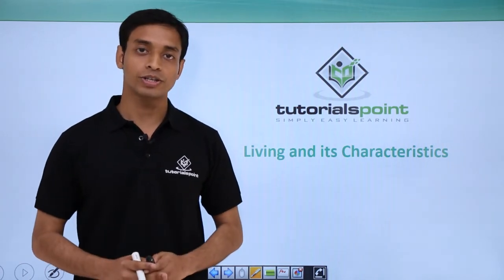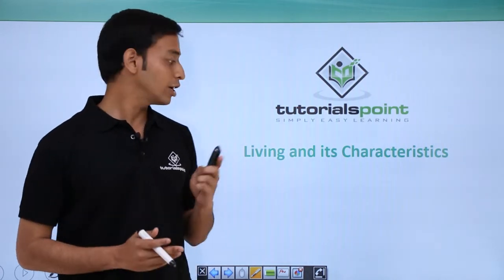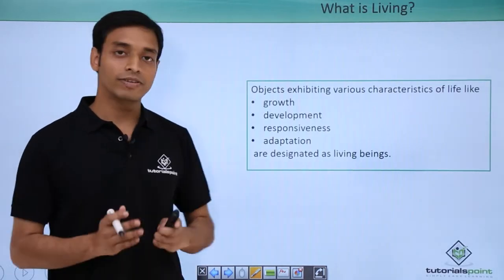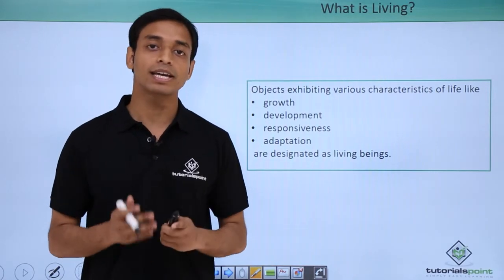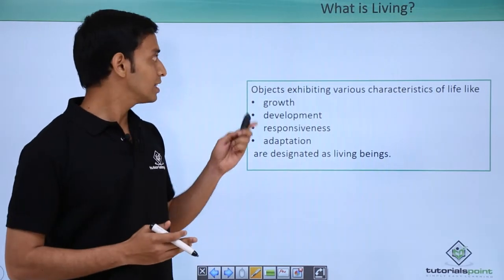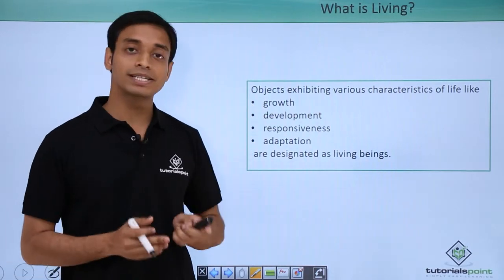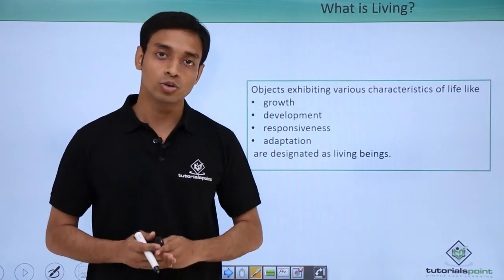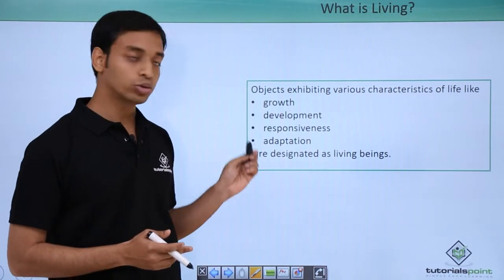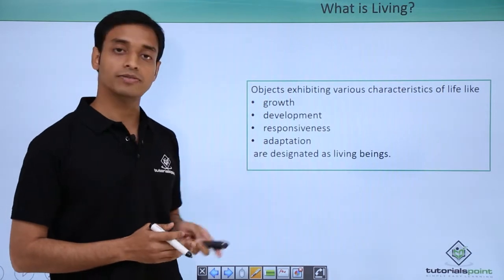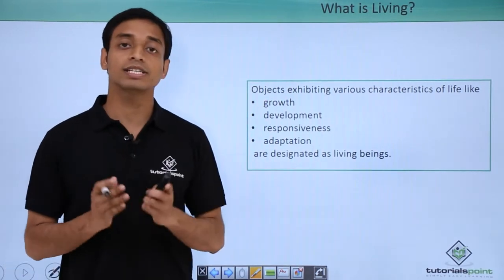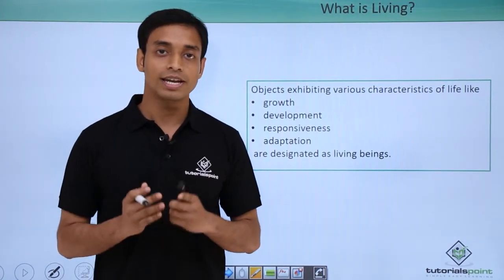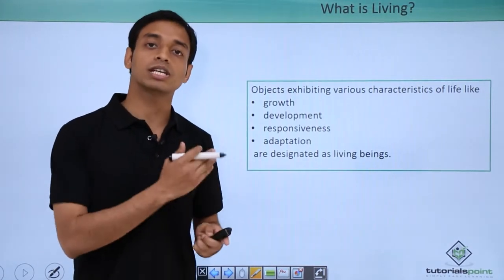Welcome to Tutorials Point. In this video we are going to talk about living and its characteristics. What is living? We define something as living if it exhibits specific characteristics of life. Those characteristics are growth, development, responsiveness, and adaptation. If some object possesses these characteristics, we can refer to it as a living object.